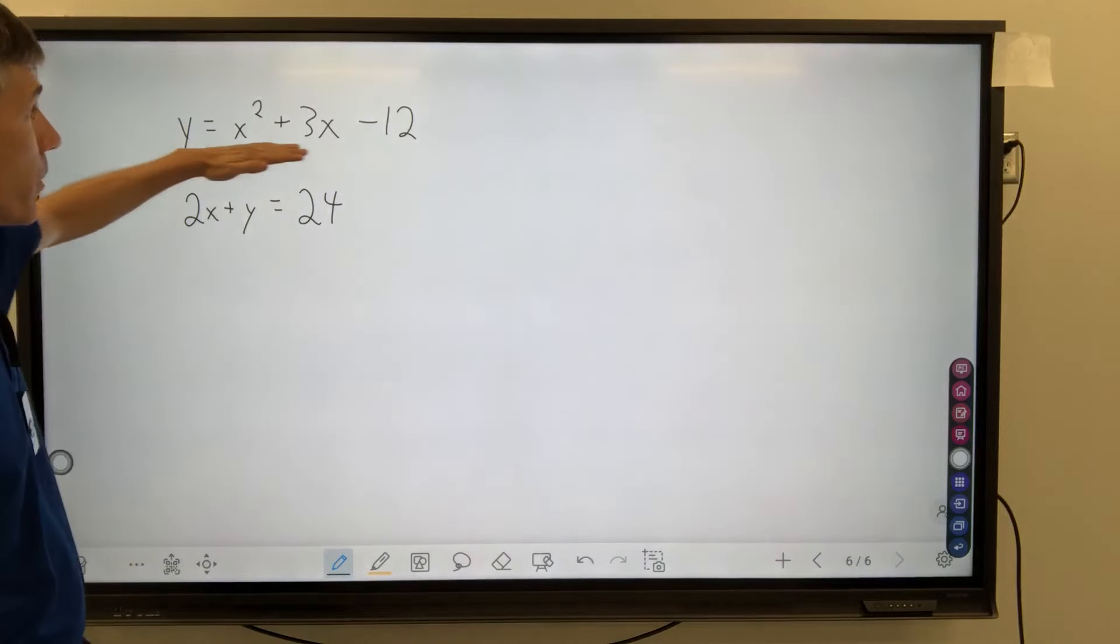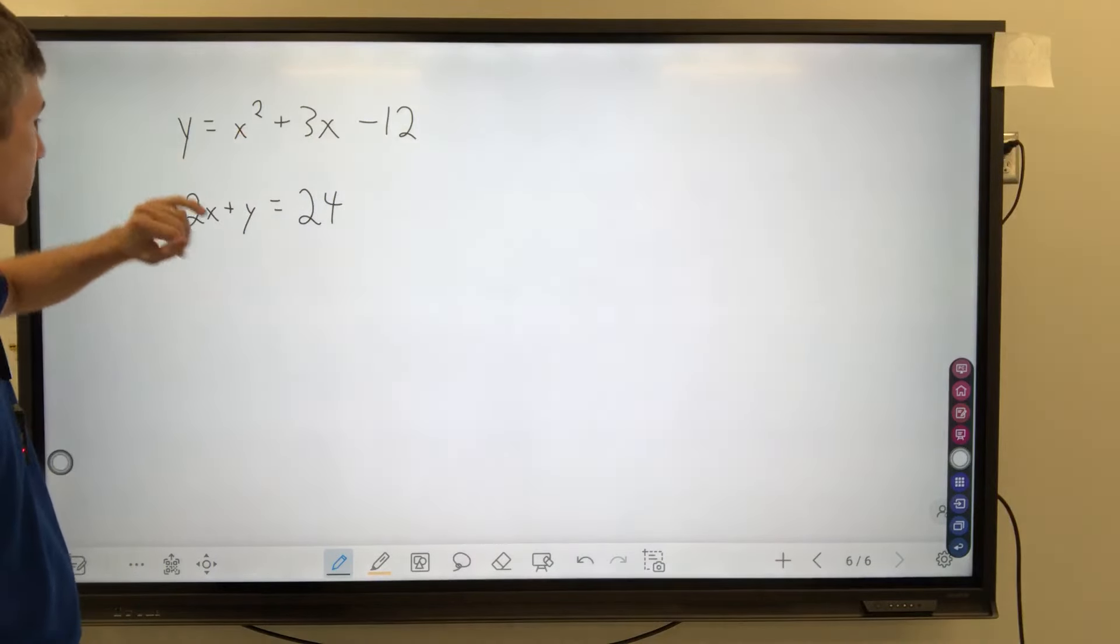Check this one out. We have a parabola. This one is squared, the y is not, and we have a line.